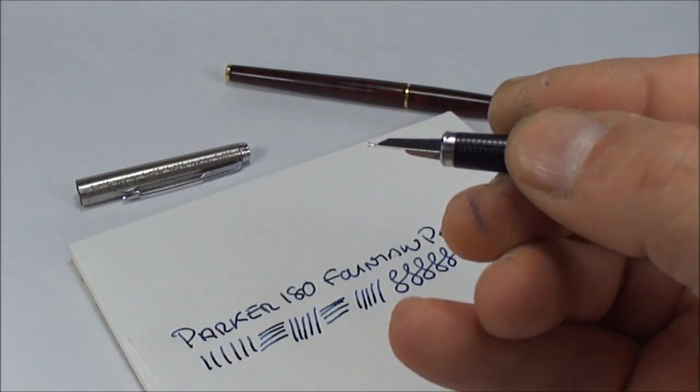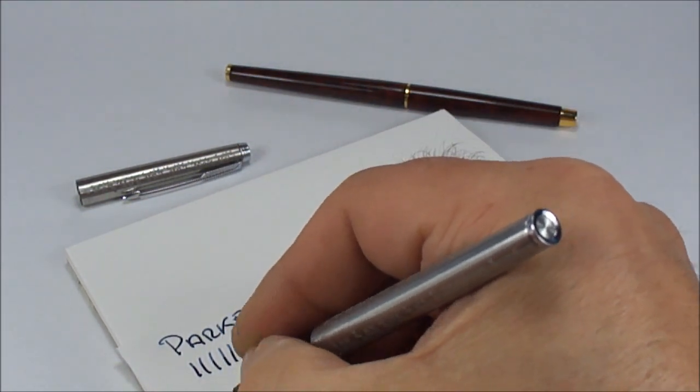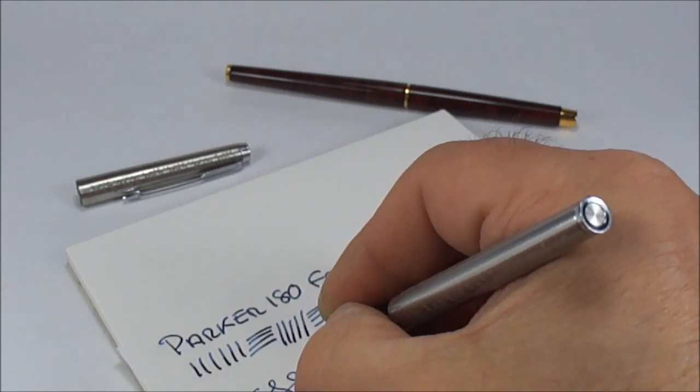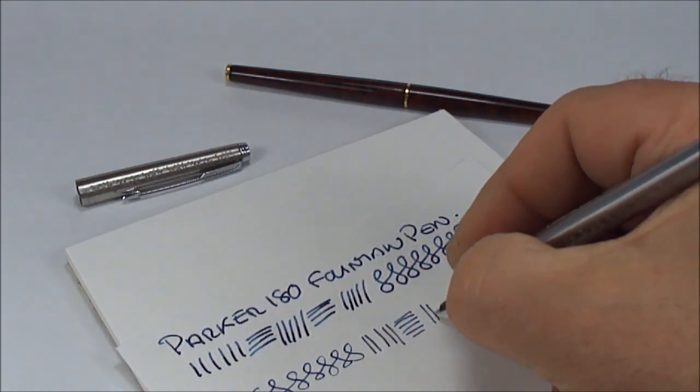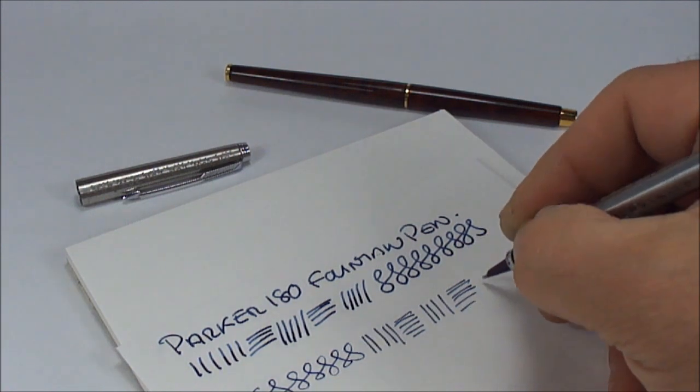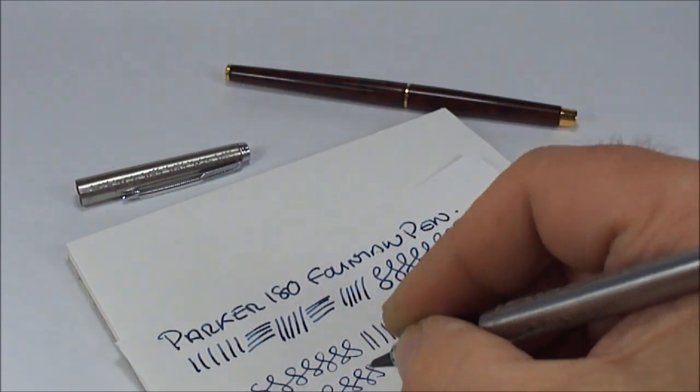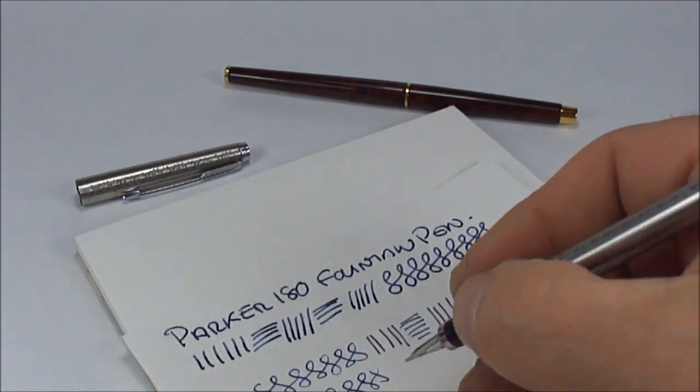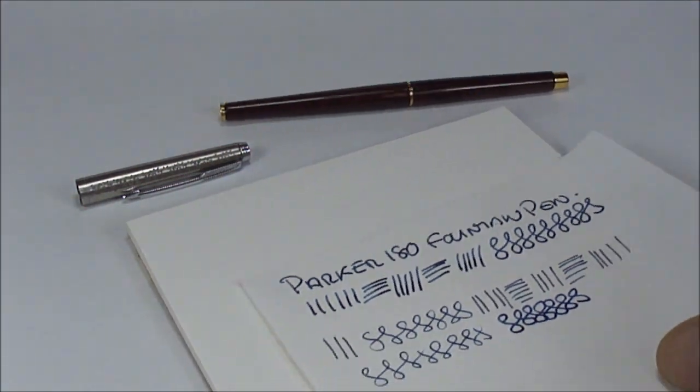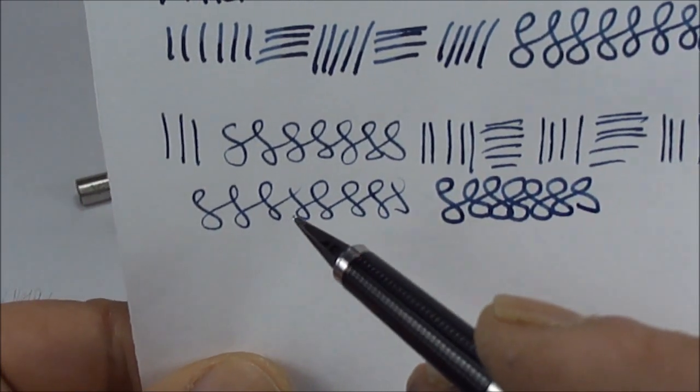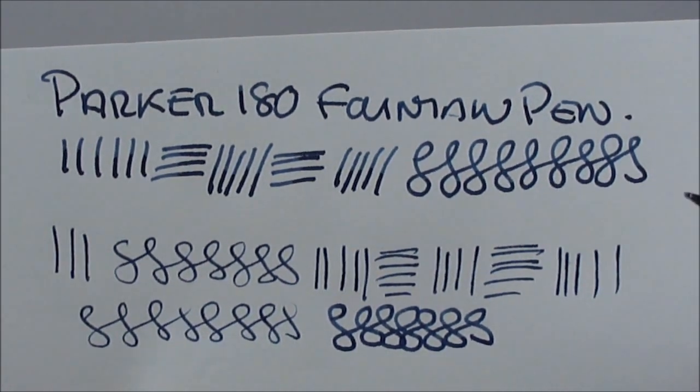If we turn the pen 180 degrees to the other side, you can see the line is now fine. In effect, you have one nib with two variations of line width. On one side fine, turn it back to normal and you have medium. You can see the two variations clearly.